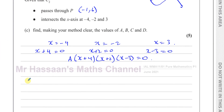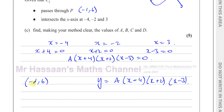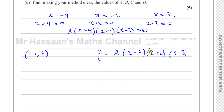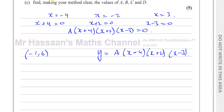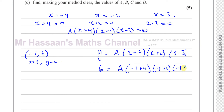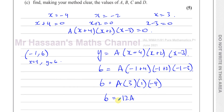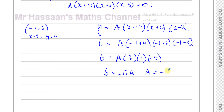Now we use the fact that the curve passes through the point (minus 1, 6). Substituting x equals minus 1 and y equals 6: 6 equals a times (minus 1 plus 4)(minus 1 plus 2)(minus 1 minus 3), which gives 6 equals a times 3 times 1 times minus 4, so 6 equals minus 12a, and therefore a equals minus one half.